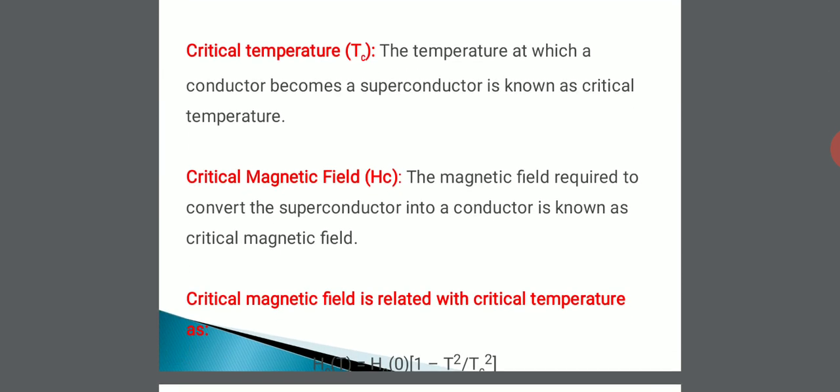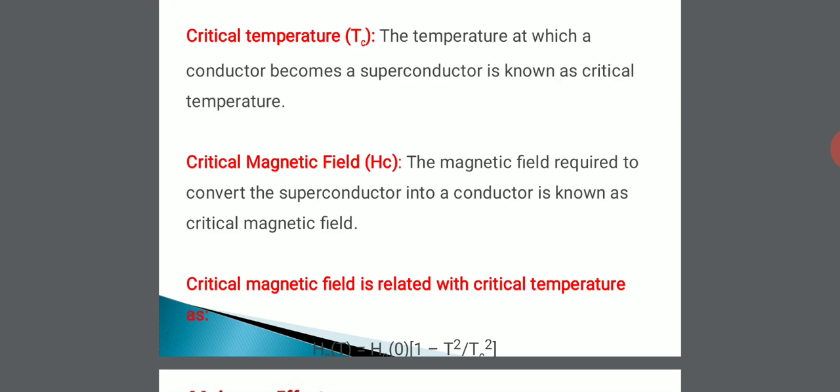Critical temperature, critical magnetic field, and critical current. In fact, what is critical temperature? The temperature at which a conductor becomes a superconductor is known as critical temperature. So if you apply more than that critical temperature, it will lose the superconductivity phenomena and become a normal conductor.